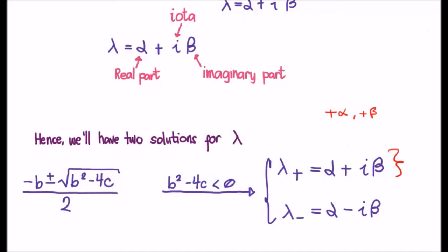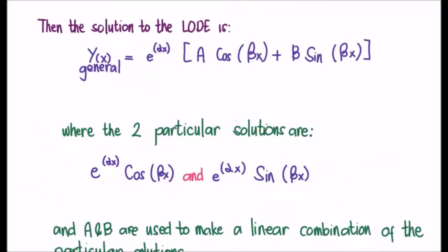At the top of your screen here is the solution to our second order linear ordinary differential equation with constant coefficients when b squared minus 4c is less than zero and we have imaginary roots. I'd like to point something out: we actually have two elements to the solution. We have e to the alpha x, and then a cos beta x plus b sine beta x.